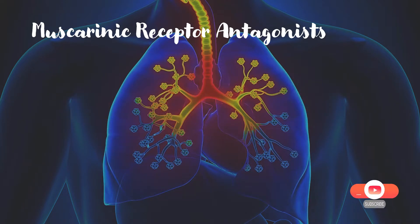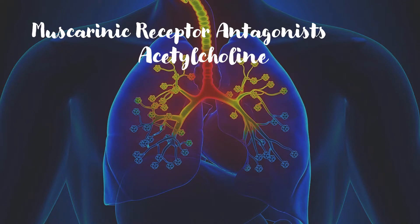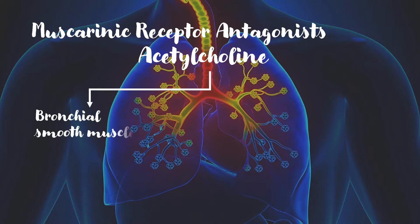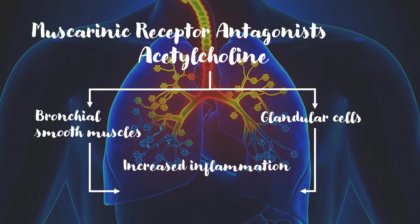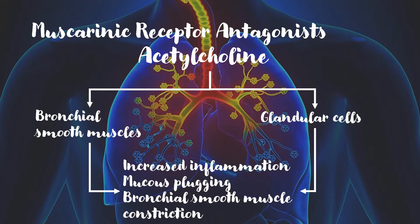In these conditions, increased parasympathetic activity via the vagus nerve results in increased secretion of ACH. High levels of ACH act on bronchial smooth muscle and submucosal glandular cells, resulting in increased bronchial inflammation, mucous plugging, and bronchial smooth muscle constriction.